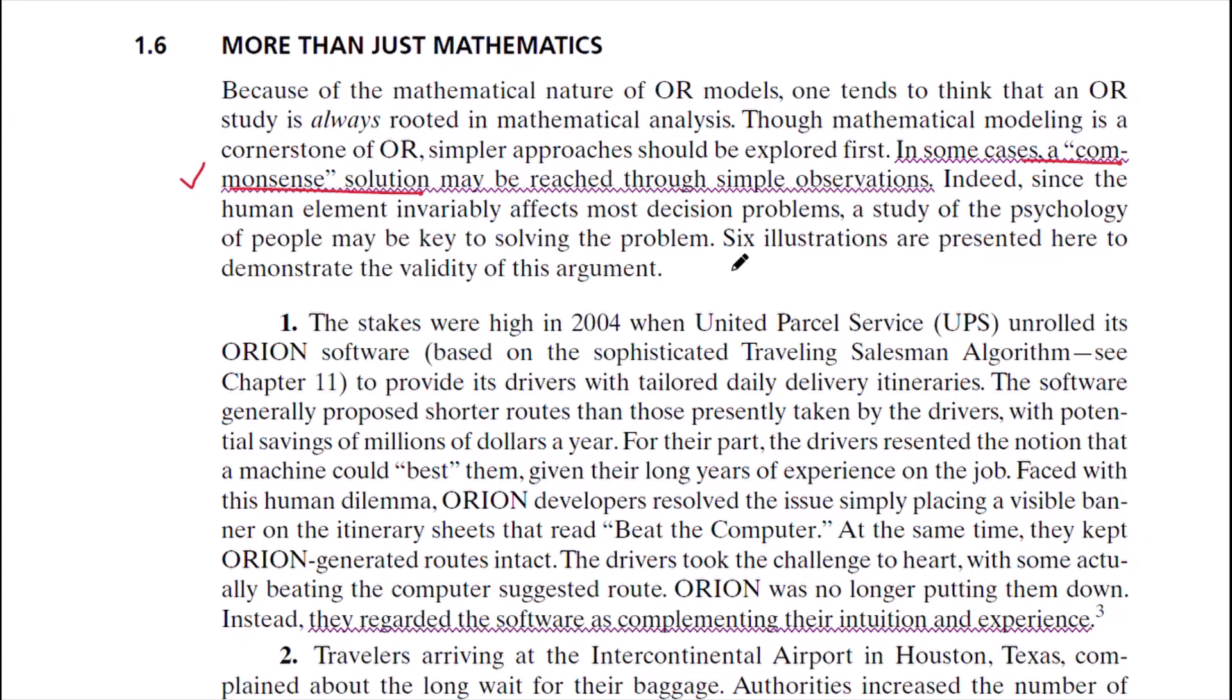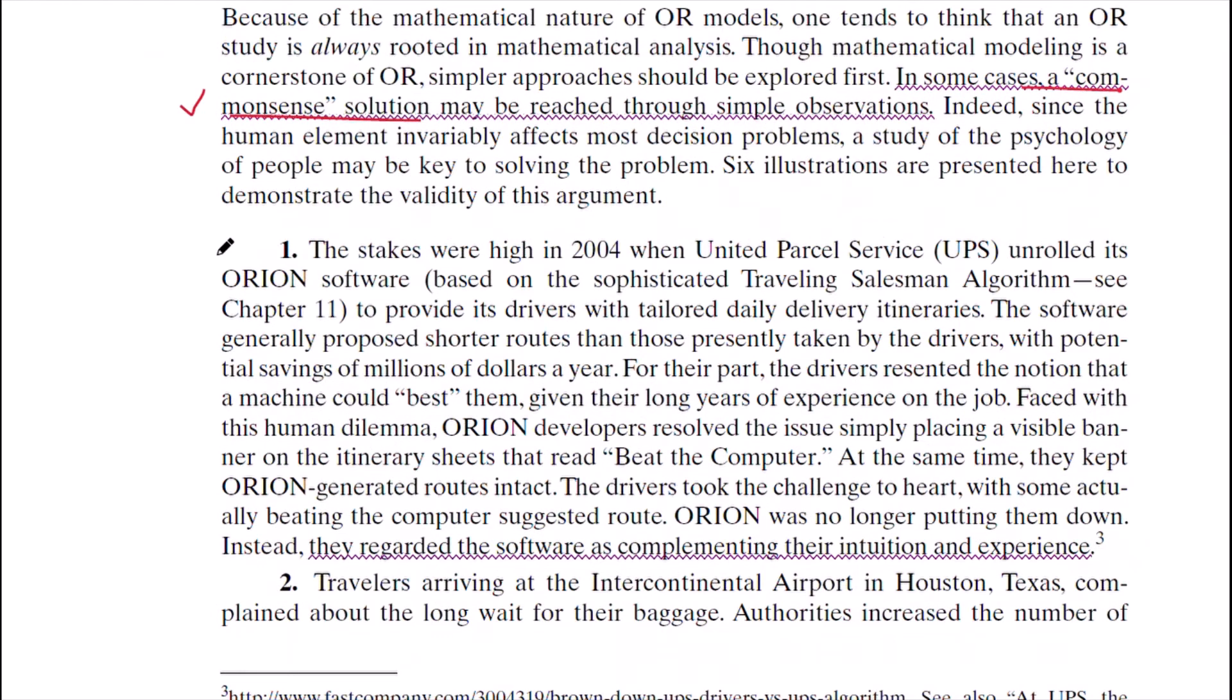So as to solve the problem, here is an interesting case which says that a software named ORION was delivered by UPS so as to locate the shortest distance using the travelling salesman algorithm so as to deliver the products.